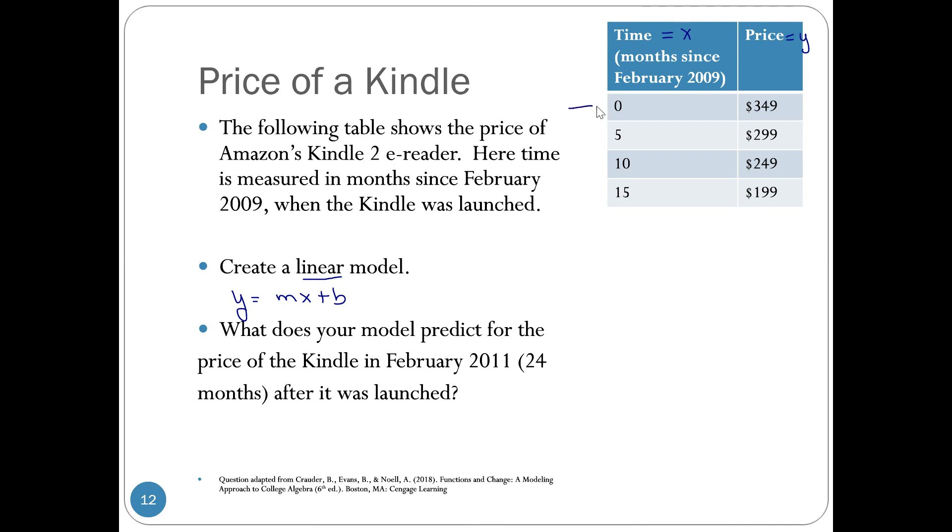Thankfully, they gave me year zero or month zero, so right here I know this is the start and so my starting price right here—this is my b value, so that's really helpful. They do not, however, give me the slope, so I do have to do some work for that. So m is y2 minus y1 divided by x2 minus x1.